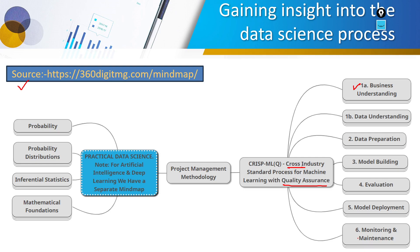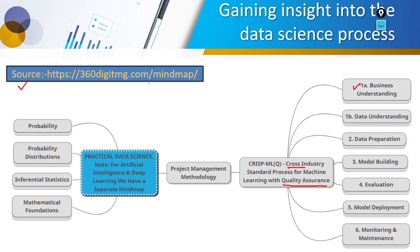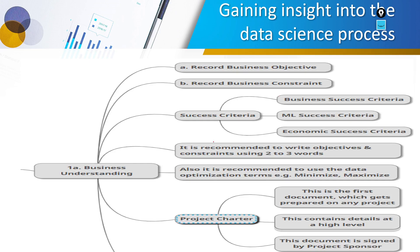In this way we have six different steps. Now for business understanding — in industry, when we deal with different types of projects, we should convert that problem into a proper business statement. What is required in business understanding: first, we should record the business objective; we should define our business objective, and second, we should define our business constraint.